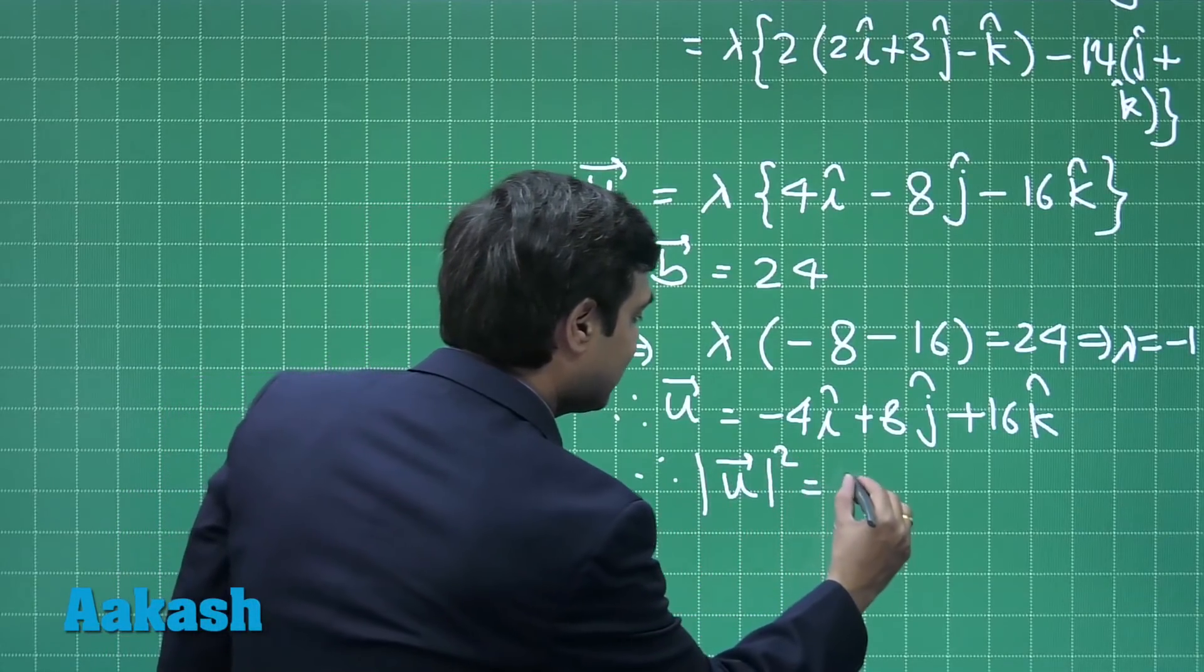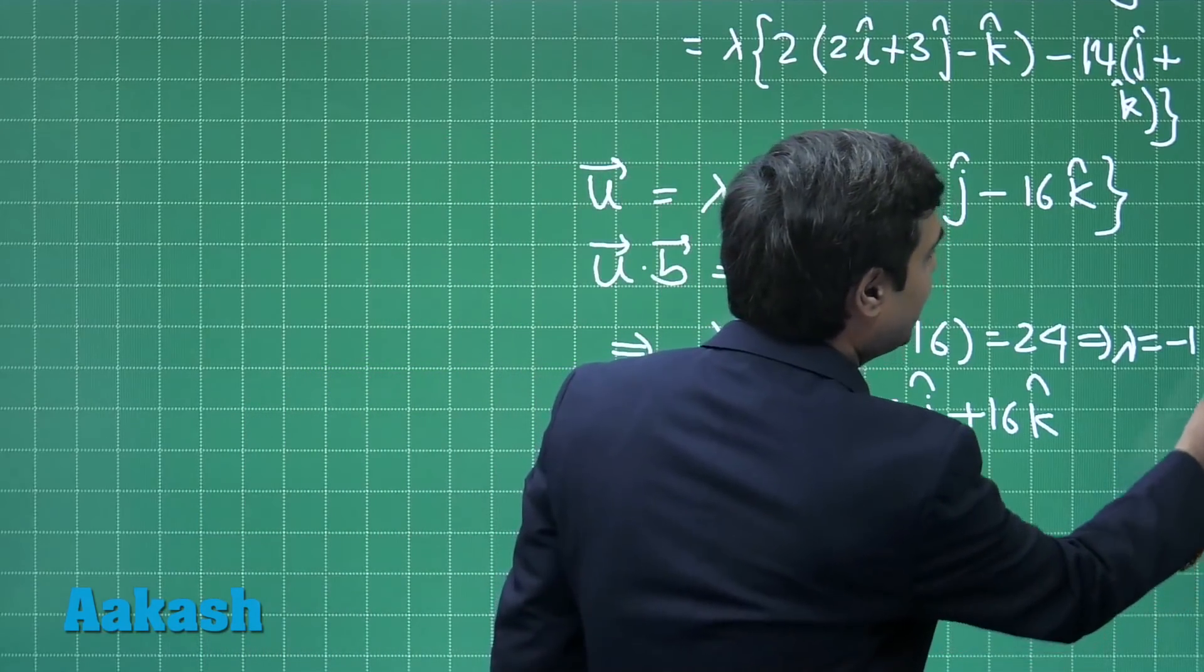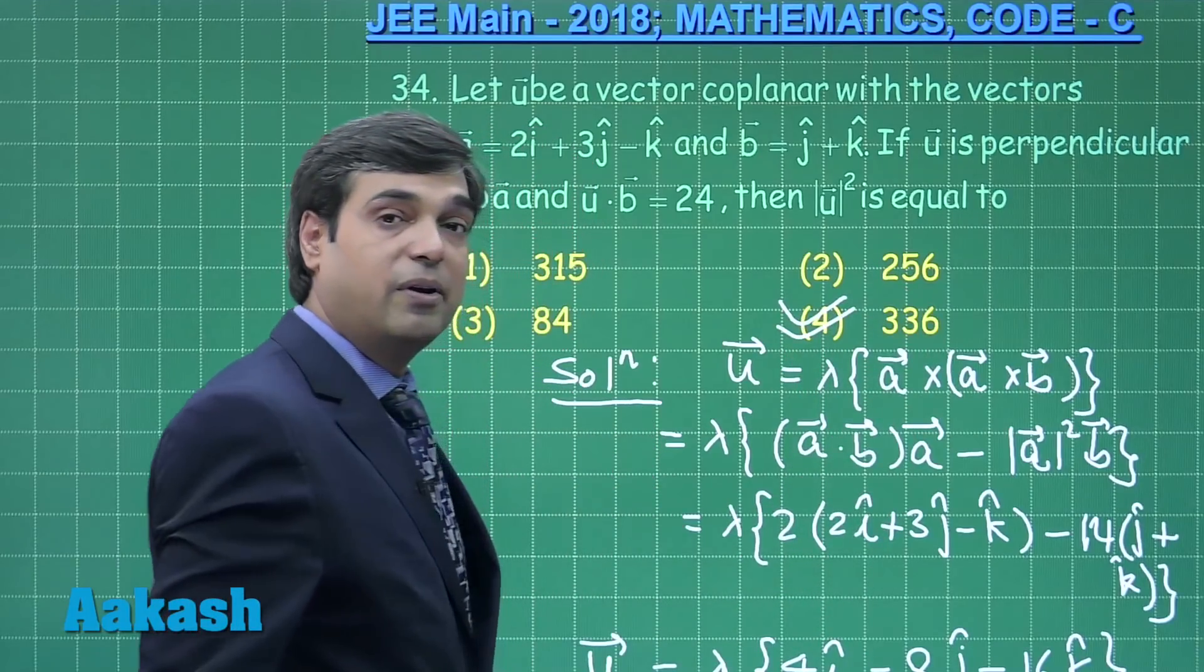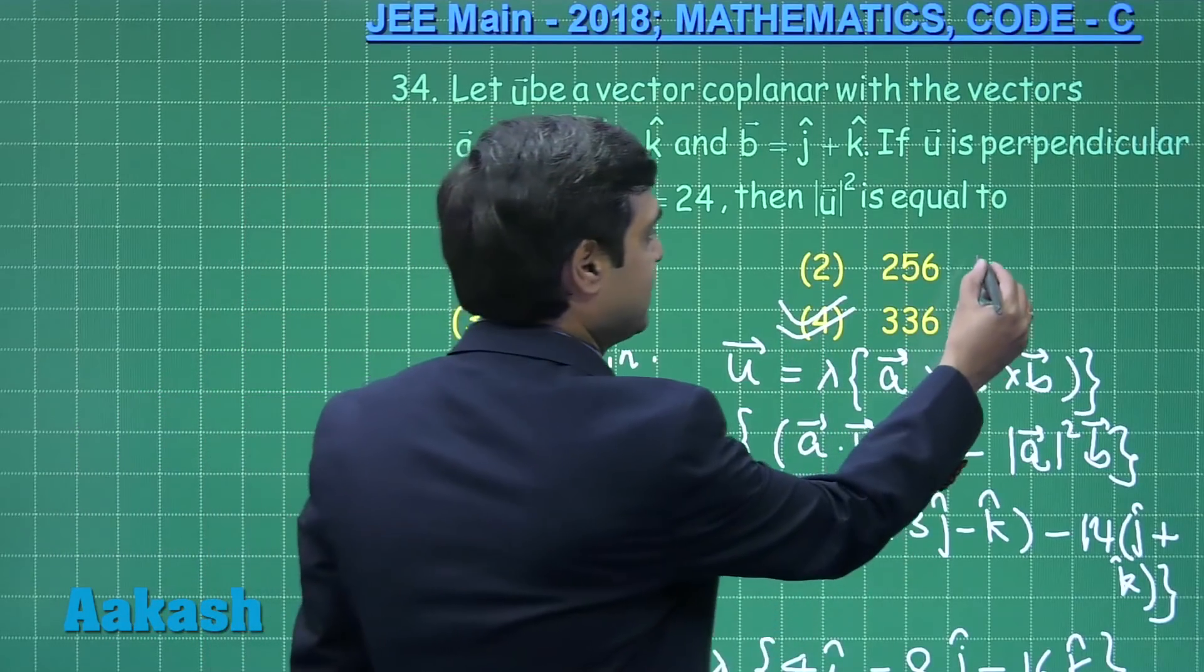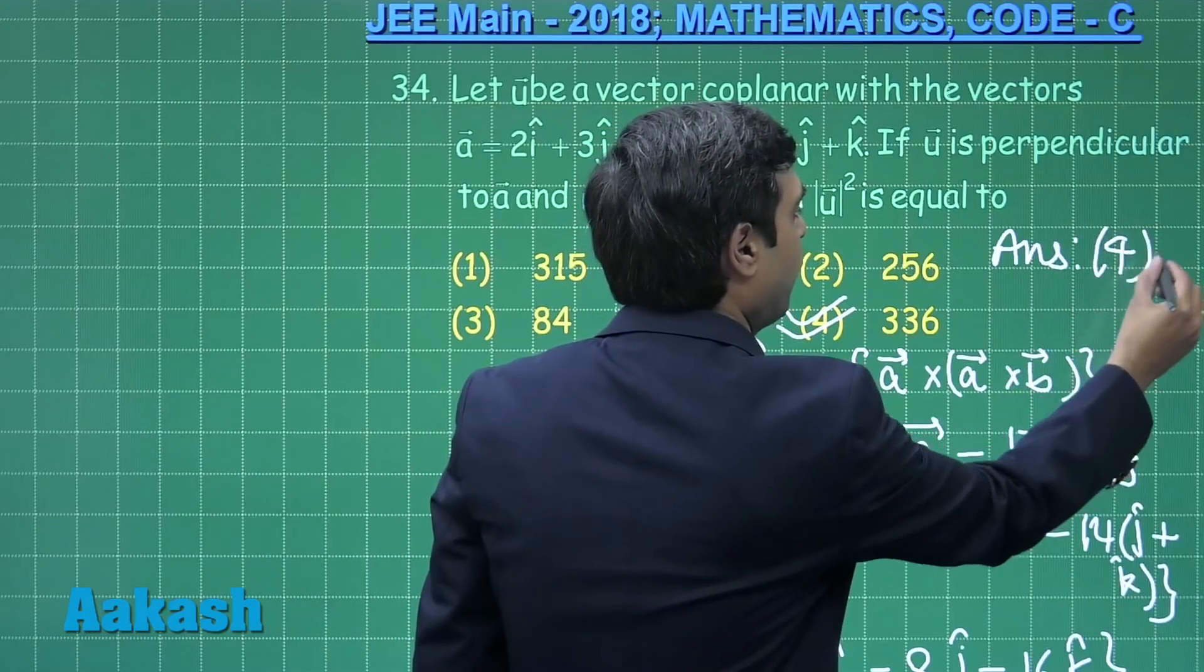Hence we obtain u vector as minus 4i plus 8j plus 16k. Therefore, mod u square is simply 336. Looking at the given options, we can clearly see the correct answer is option number 4, which is 336. Therefore, answer is option 4.